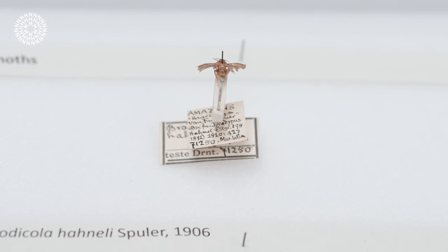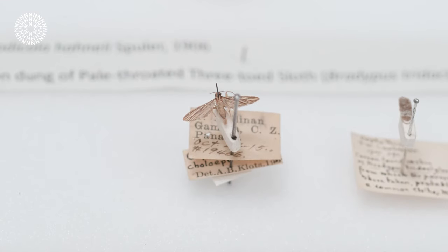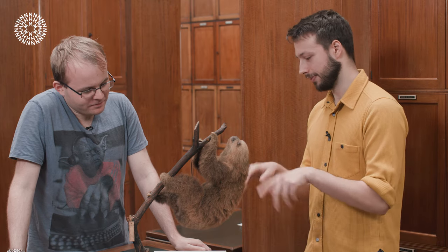A more out-there idea that's been suggested relates to the three-toed sloths, where you see a lot of sloth moths — another species found only in the fur of sloths. We actually have some examples here. These are pretty unremarkable-looking little brown moths that have only been found living in the fur of the sloth.